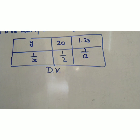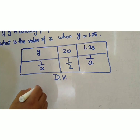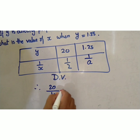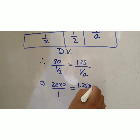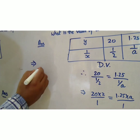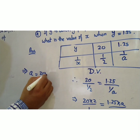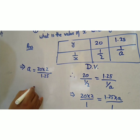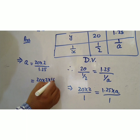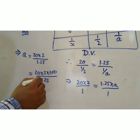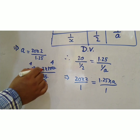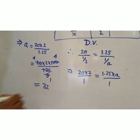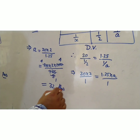Using direct variation, y₁/( 1/x₁) = y₂/(1/x₂): 20 divided by 1/2 equals 1.25 divided by 1/A. This gives 20 × 2 = 1.25 × A, so A = 40 / 1.25 = 40 × 100 / 125. Simplifying: 4000/125 = 32. The required value of x is 32.